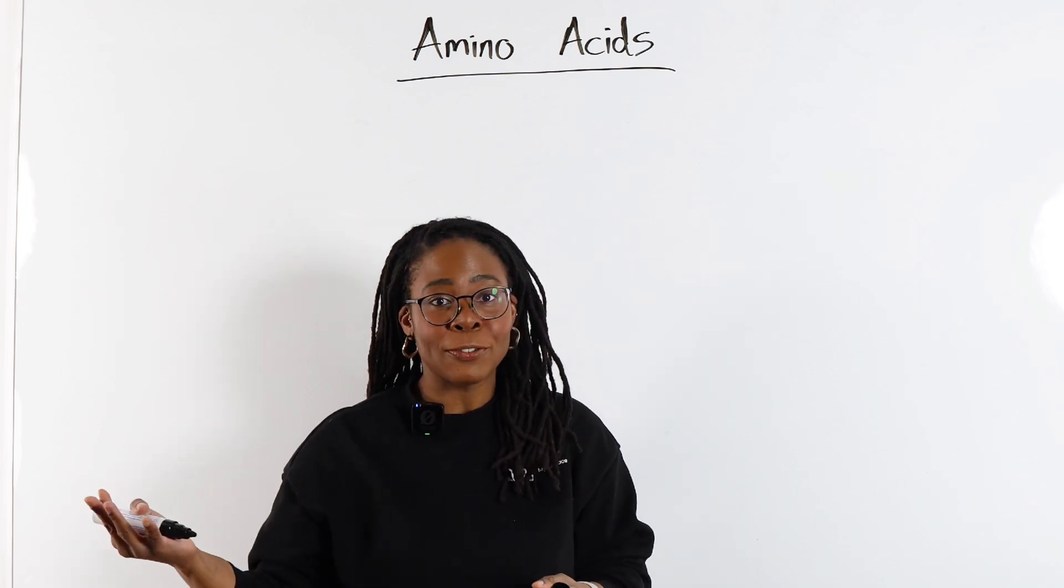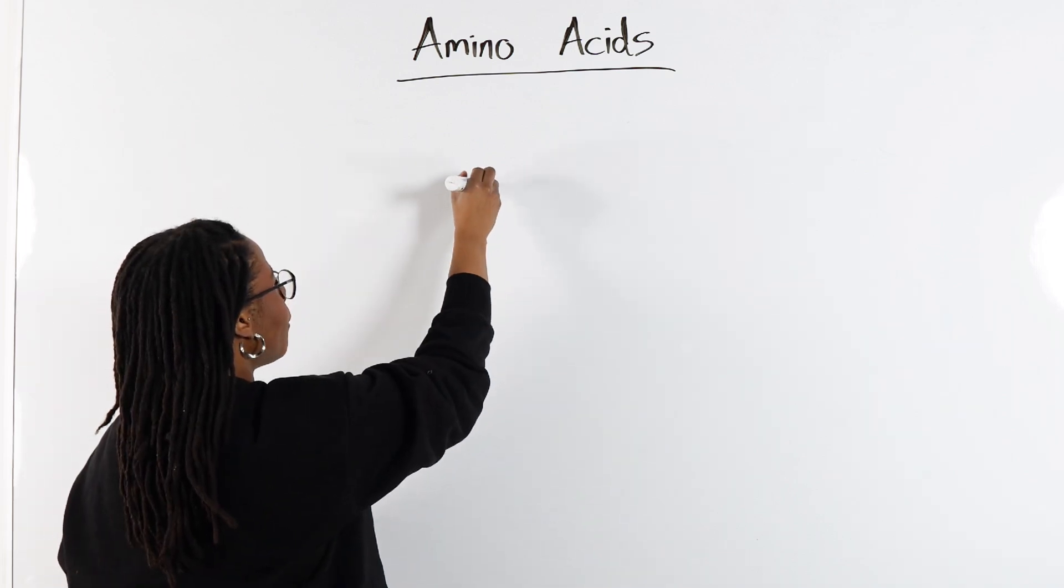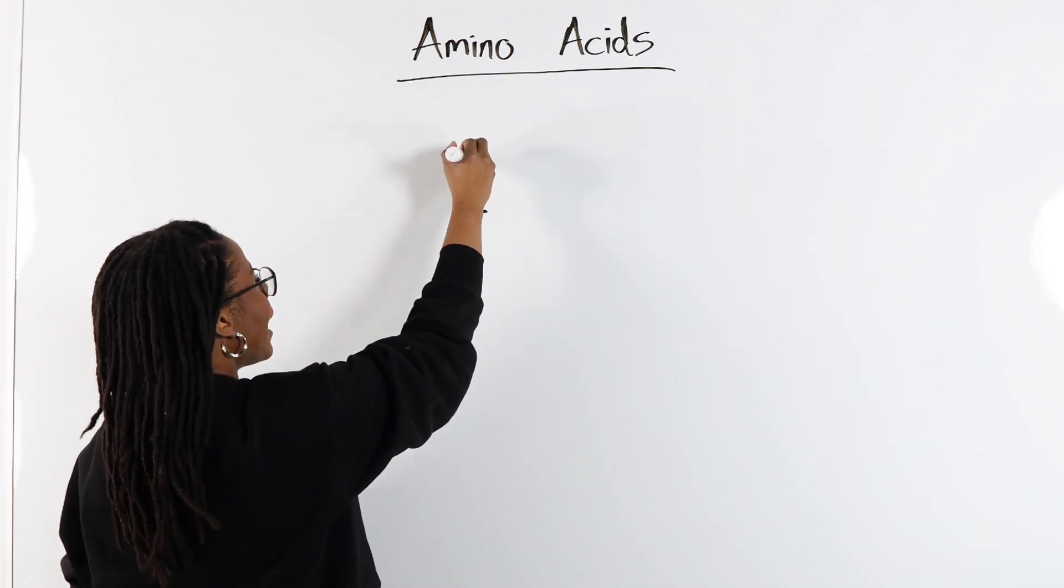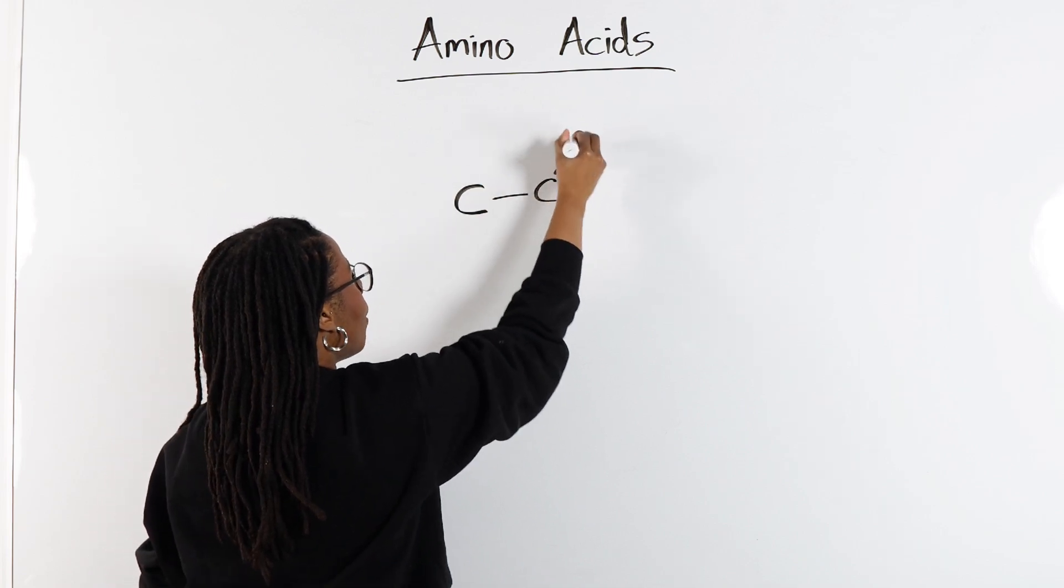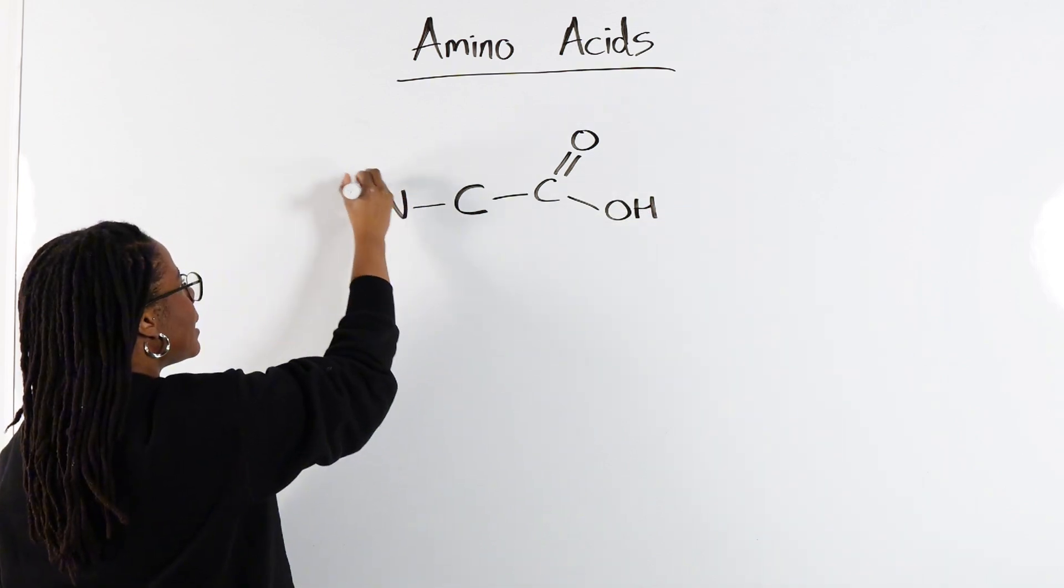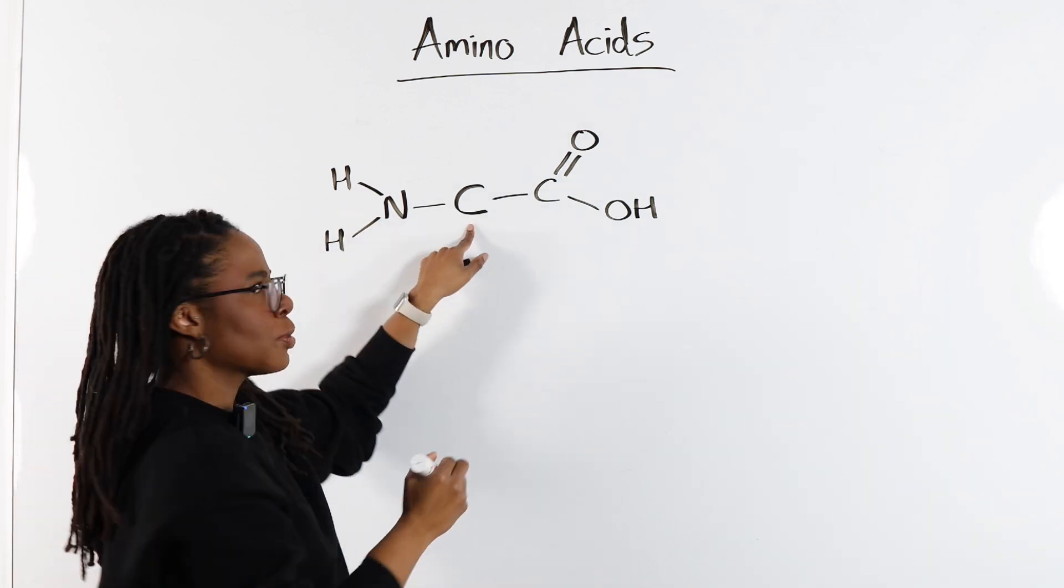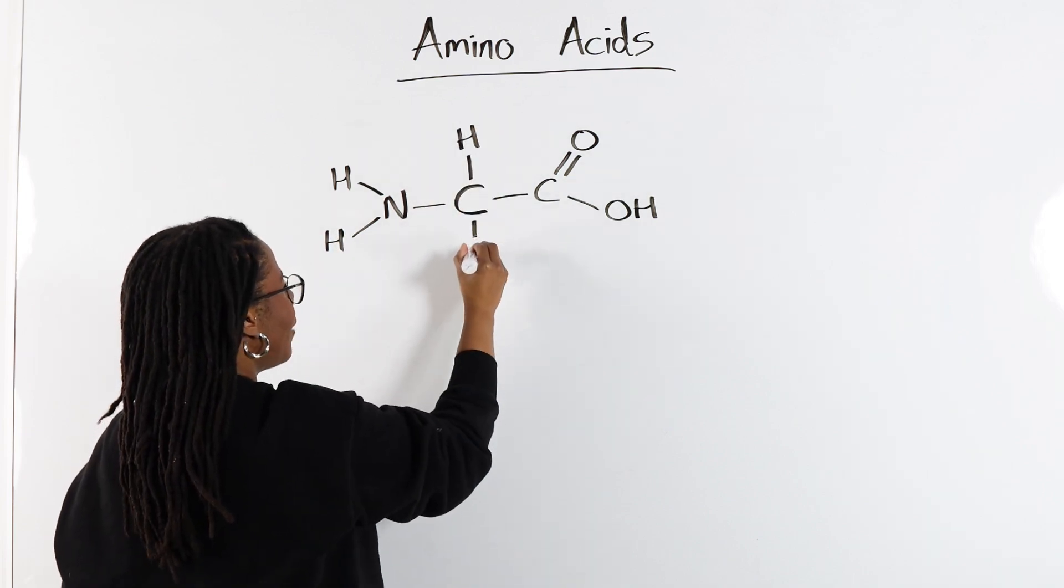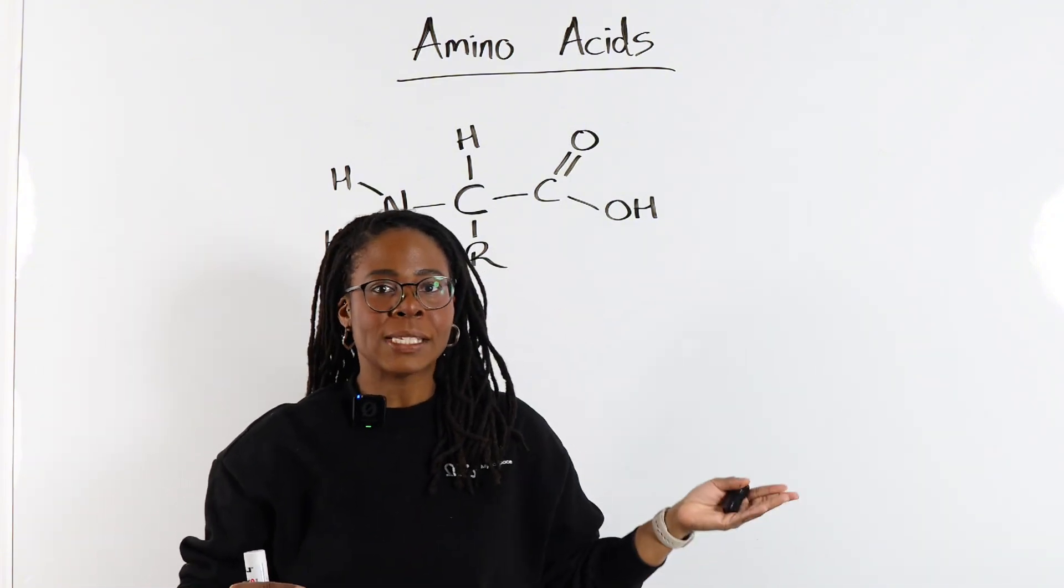If you're doing A-level biology or triple science for GCSE, you'll be familiar with amino acids. We start with our central carbon atom with a carboxyl group for our carboxylic acid, our amine group as the amino part, and then on this central carbon, sometimes called the alpha carbon, you will have a hydrogen and an R group. It's this R group that's going to change from one amino acid to the next.